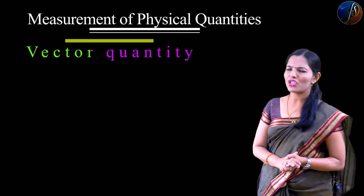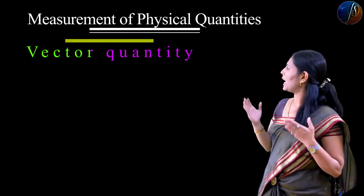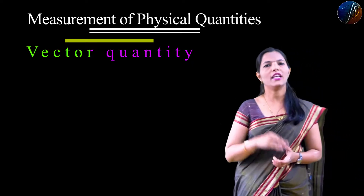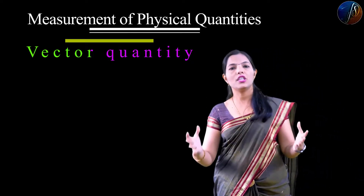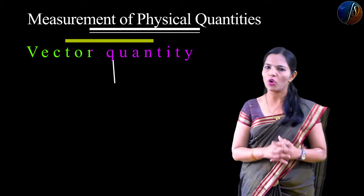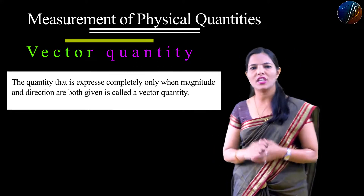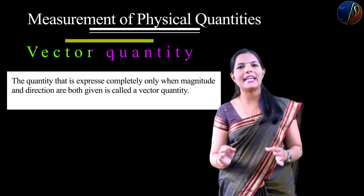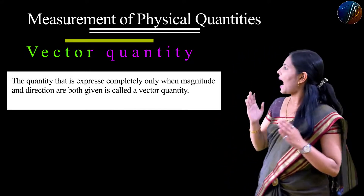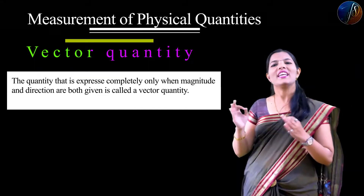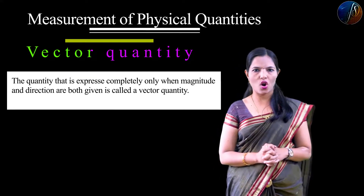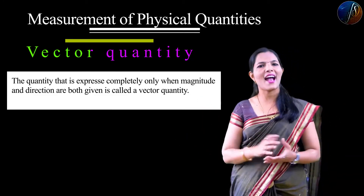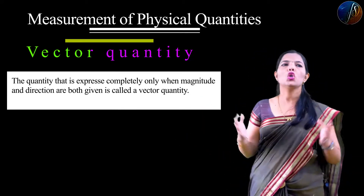So what is the definition of vector quantity? The quantity which can be expressed completely with the help of magnitude and direction is called a vector quantity.